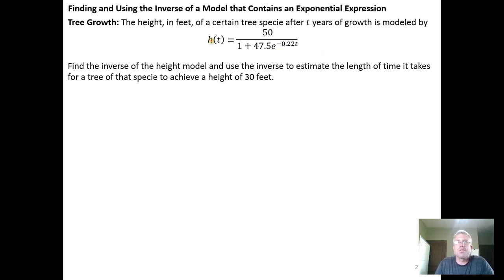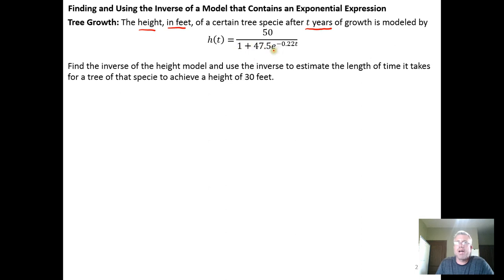This model says that the height in feet of a certain tree species after t years of growth is modeled by: height equals 50 over the expression 1 plus 47.5 times e to the negative 0.22t. So here's an exponential expression sitting inside this logistic model.